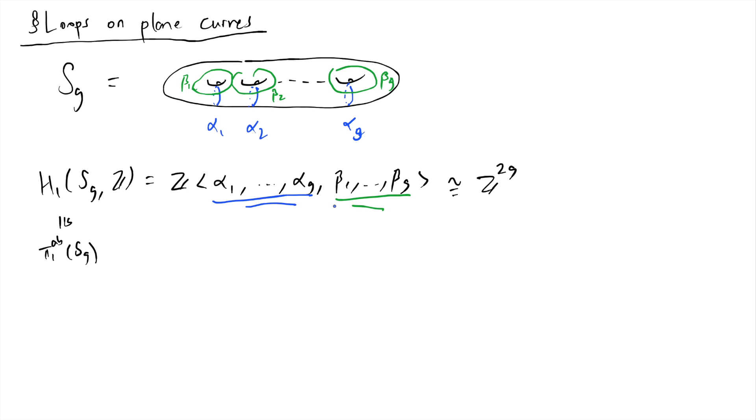If we're being very precise, these are of course homology classes of these loops. But we don't need to be so pedantic here. As I mentioned, when we have a curve that's of genus g, then the underlying surface looks like this. It will have these 2g loops inside of it.